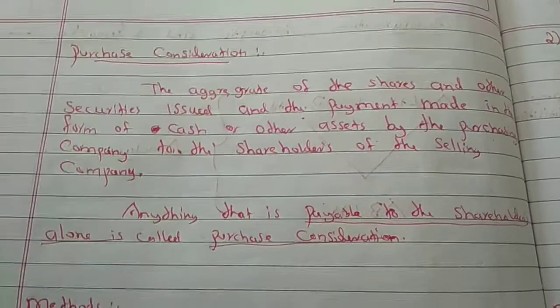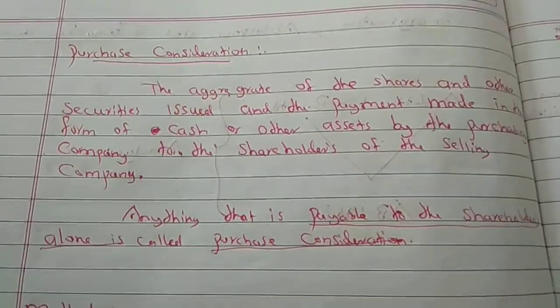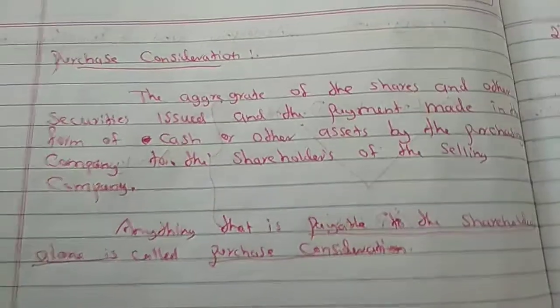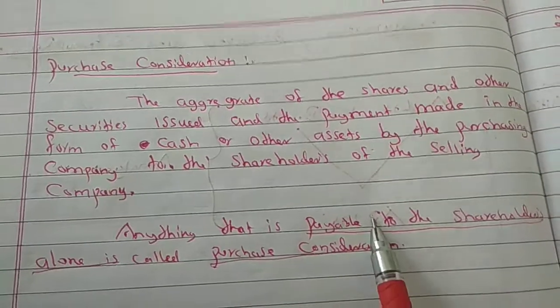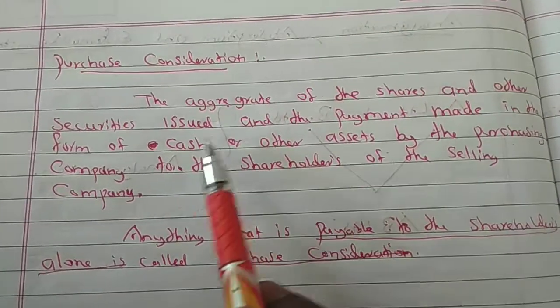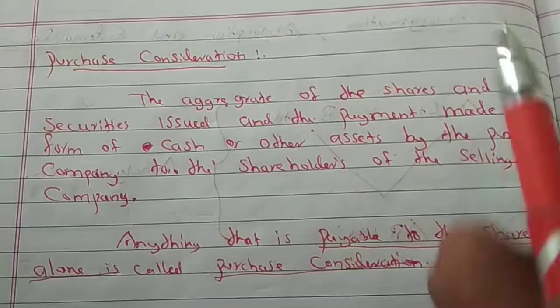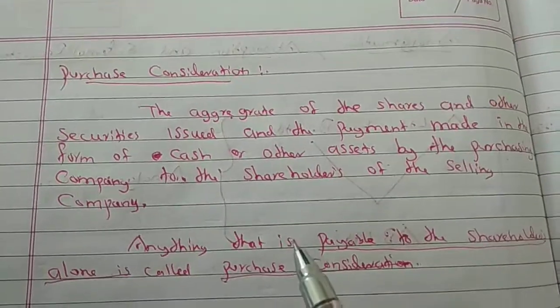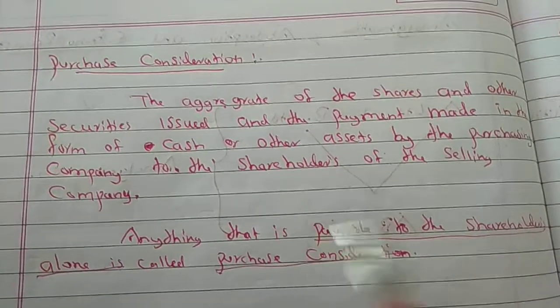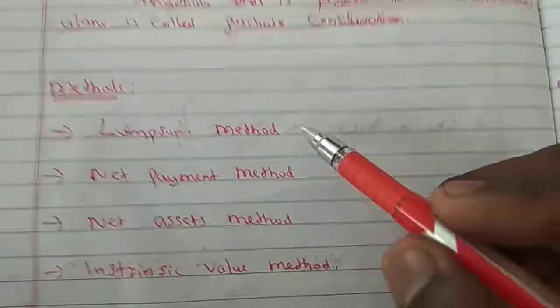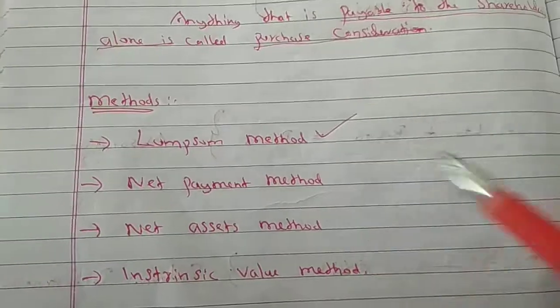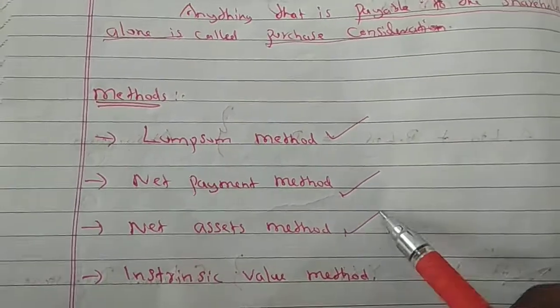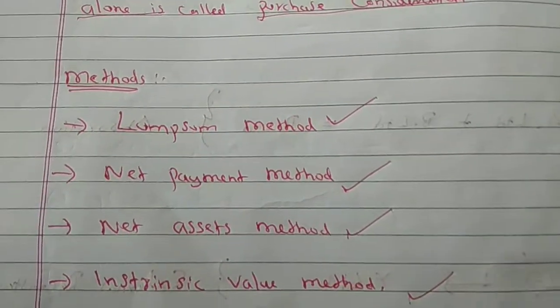When one company buys another, whatever is given to the opposite company's shareholders is the Purchase Consideration. The payment may be in the form of cash or other assets. There are four methods for calculating Purchase Consideration: Lumpsum method, Net Payment method, Net Asset method, and Intrinsic Value method.